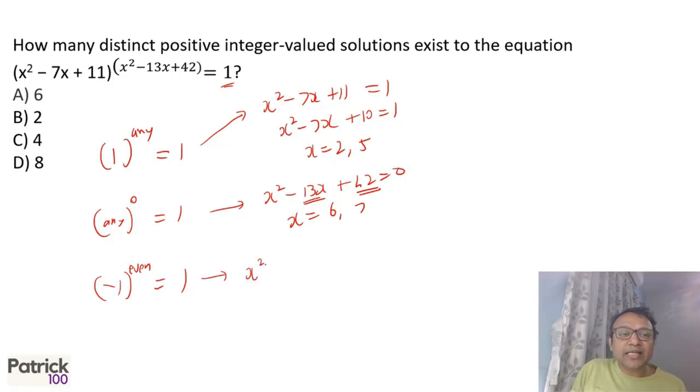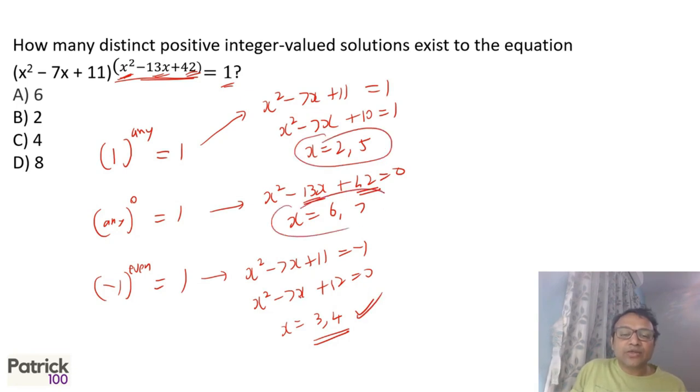Third case: we require the base x² - 7x + 11 = -1, or x² - 7x + 12 = 0. You get roots as 3 and 4. Now check: if I put 3 and 4, I will get the power as even. Because if I put 3, I get even; if I put 4, I get even. So power is even, so it satisfies. In that case, we have six values that satisfy. So automatically you have six solutions, option A. That will be the answer.